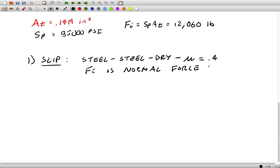So if I multiply Fi by that static coefficient of friction, I get an actual force F which can be carried by the bolt itself. So the friction force, called FF, is just Fi times μ. Fi was 12,060, that gives us 4,824.